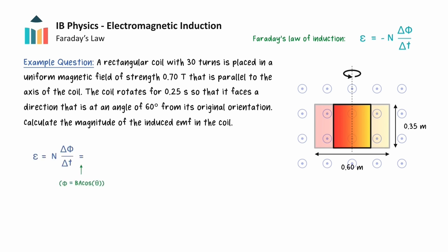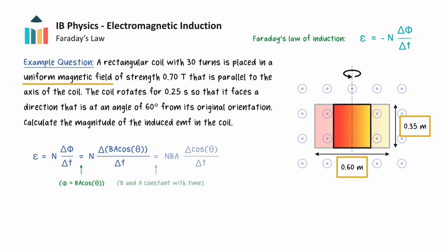We begin by substituting in the expression for magnetic flux linkage in Faraday's law. The magnetic flux density and area of the coil remain constant with time, so these variables can be taken out as constants. The only variable that changes the magnetic flux with time is the angle theta between the magnetic field and the normal to the plane of the coil. We can now substitute in the relevant values.